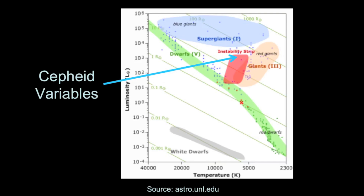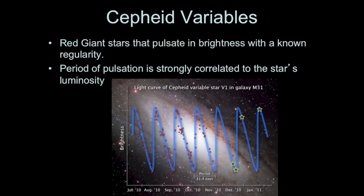Cepheid variables are red giant stars that are unstable and pulsate in brightness periodically. Their period of pulsation is very strongly related to luminosity. Here is a graph of a typical Cepheid variable star — brightness versus time, it is very cyclical. Cepheid variables can have periods of anywhere from one to a hundred days, making them a little bit easier to measure than some other variable stars.